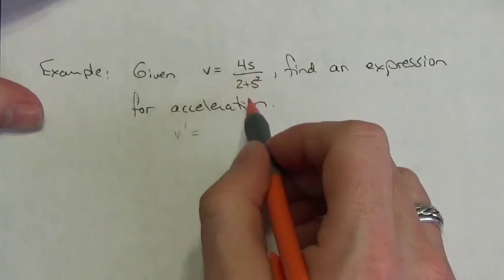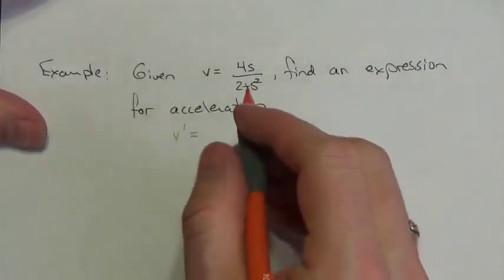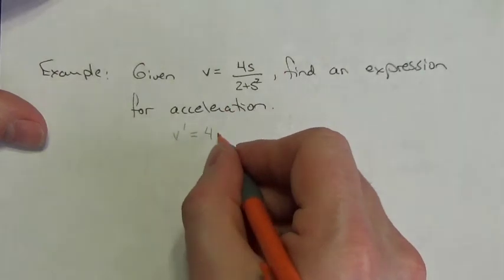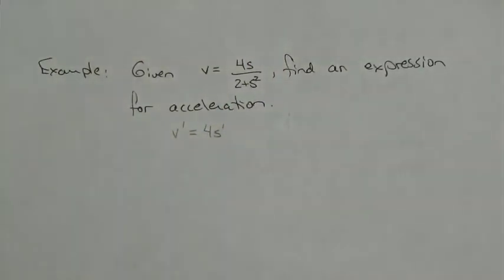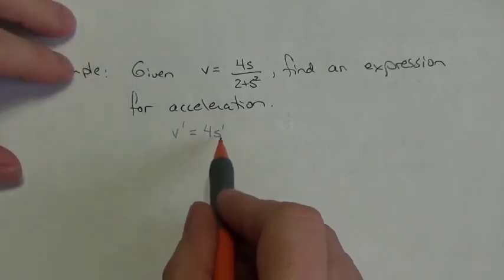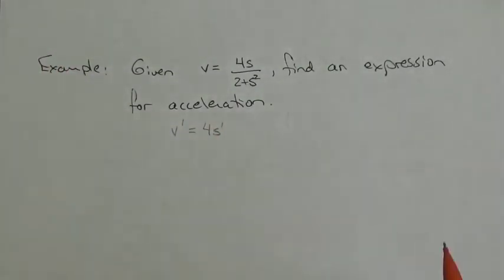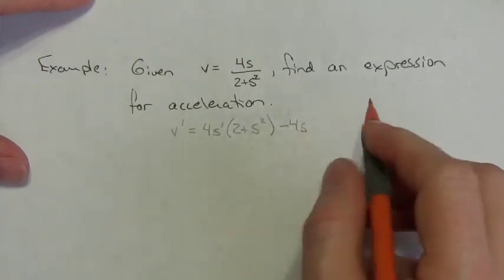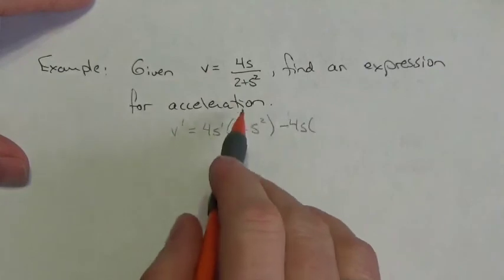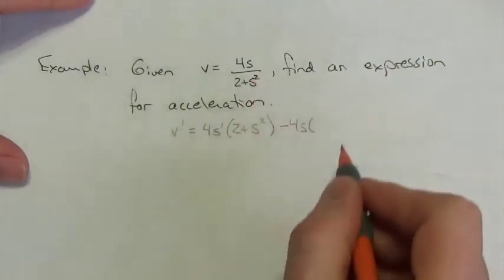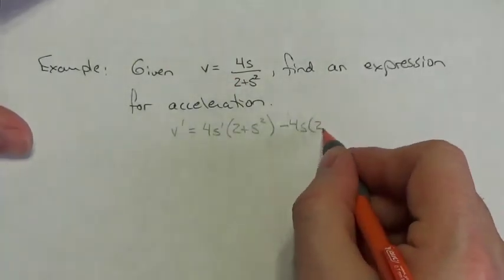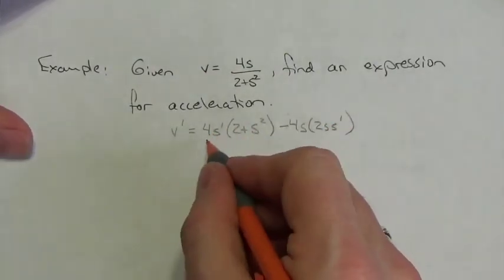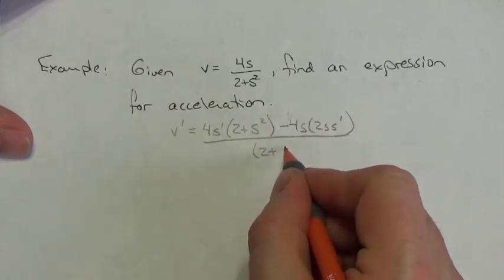On the right-hand side, 4s over (2 + s²) is going to require the quotient rule. The derivative of the numerator: the derivative of 4s would be 4 multiplied by s′, because I don't know what the derivative of displacement is. So I use s′ to replace it, multiplied by the denominator, minus the numerator multiplied by the derivative of the denominator, which will be 2s·s′.